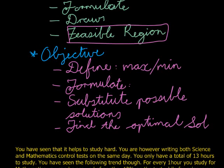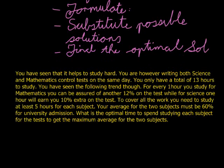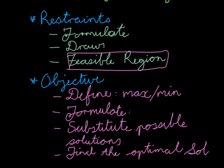So basically, we have our restraints and objectives. For the restraints we formulate, draw, and find the feasible region.